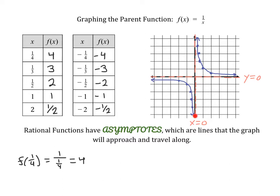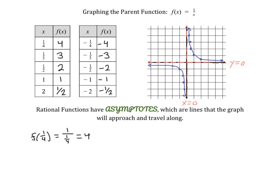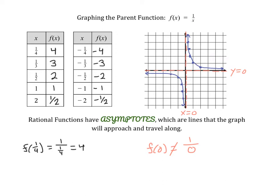If we plug in x equals 0 into our function, we get 1 over 0. Hopefully we remember that we cannot divide by 0 — the denominator can never be 0 — and that's why we have the vertical asymptote. The reason we'll never hit y equals 0 is that 1 divided by any number, whether positive or negative, will never be 0. You can get a really, really tiny number — something super close to 0 — or a really big number, but it will never hit 0. That's why we have these two asymptotes.